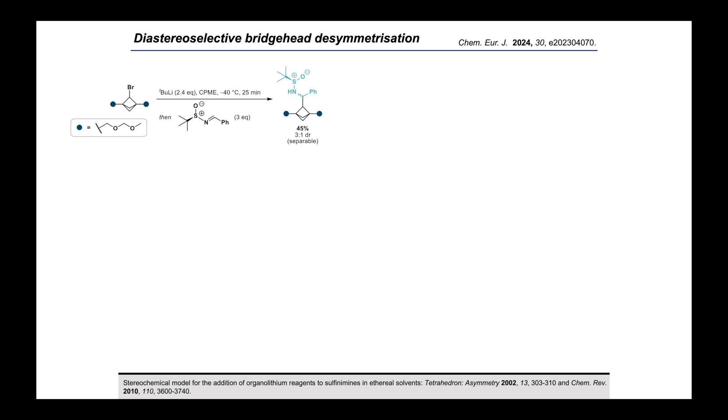As we explored the scope of electrophiles that we could use in our reaction, we also tried quenching the lithiated BCP with an Ellman-type sulfenamide, which proceeded, as expected, to give two separable diastereomeric sulfenamides. The stereochemistry of the diastereomers was assigned based on the open, or non-chelated, transition state proposed in the literature, for the addition of organolithium reagents to sulfenamines in ethereal solvents. We then of course wanted to cleave the auxiliary in each case, to give the two enantiomeric primary amines.